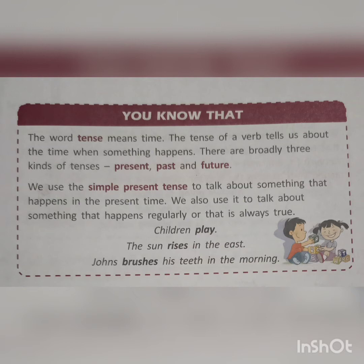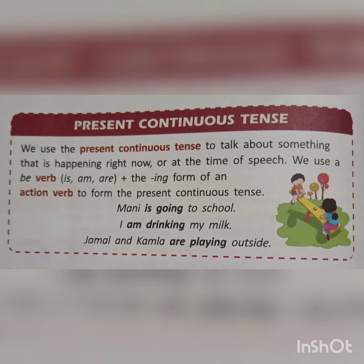Here you can see present continuous tense. We use the present continuous tense to talk about something that is happening right now or at the time of speech. We use a be-verb — that is is, am, or are — plus the -ing form of an action verb to form the present continuous tense. For example: Mony is going to school. I am drinking my milk. Jamal and Kamal are playing outside.